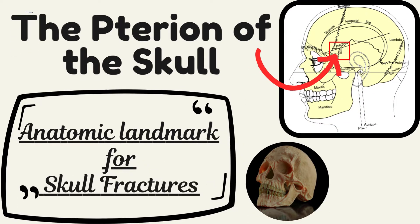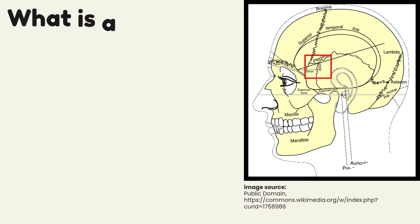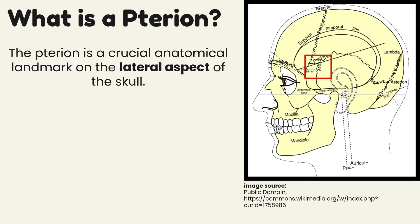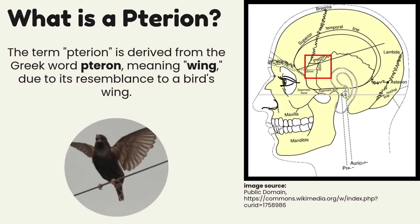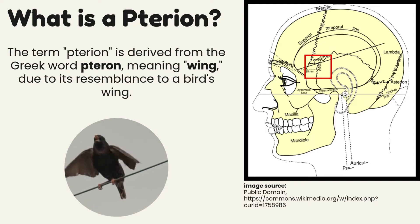In this video we will discuss an important anatomical landmark of the skull — it is called the pterion. The pterion is a crucial anatomical landmark on the lateral aspect of the skull. It is the point where four cranial bones articulate. The term pterion is derived from the Greek word 'pterin,' meaning wing, due to its resemblance to a bird's wing.